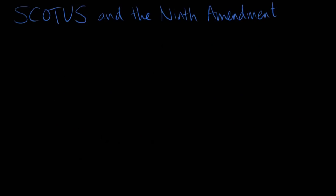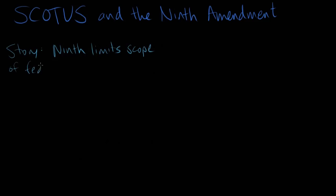Has the Supreme Court ever decided a case based on the Ninth Amendment? The first judicial opinion was actually written by Justice Joseph Story, one of the most famous justices in American history. In his opinion in Houston v. Moore, decided in 1820, Story explained that the spirit and letter of the Ninth Amendment called for a limited interpretation of the scope of federal power in order to avoid interfering with state laws regarding the local militia. It wasn't until the 20th century that scholars and justices tried to invert the Ninth Amendment in a manner that allowed or even required federal interference with local policies.